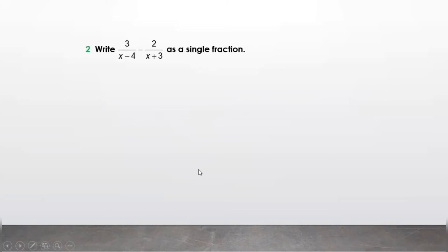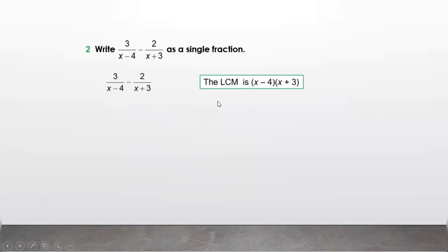Write 3 upon (x minus 4) minus 2 upon (x plus 3) as a single fraction. First we need to find the LCM of the denominators. Since they are different, the LCM is the product: (x minus 4) into (x plus 3).